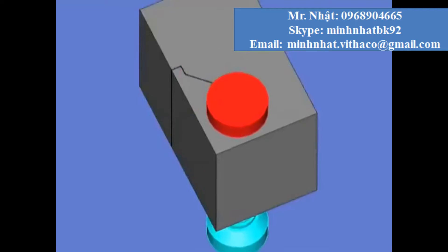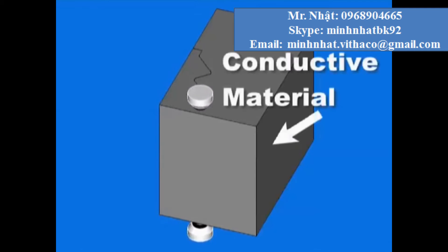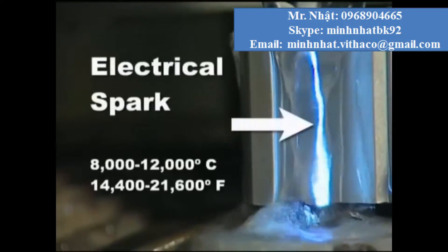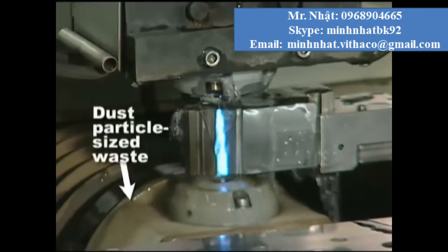These animations help show how wire EDM works. The wire carries one side of the charge. Conductive material carries the other side of the charge. And when the two get close, a white hot electrical spark jumps the gap, melting away tiny dust particle-sized pieces of metal.